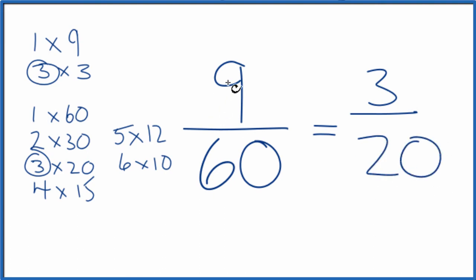So we've simplified 9 60ths down to 3 20ths. We can't simplify this any further. If you divide 9 by 60 and 3 by 20, you're going to get the same number because they're equivalent fractions. We've just simplified 9 over 60 down to 3 over 20.